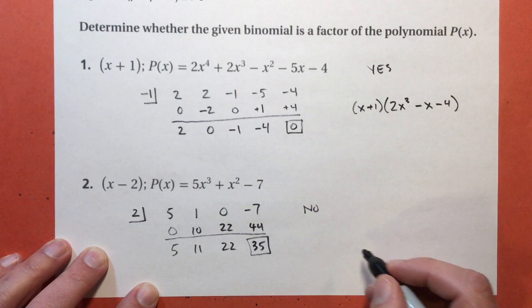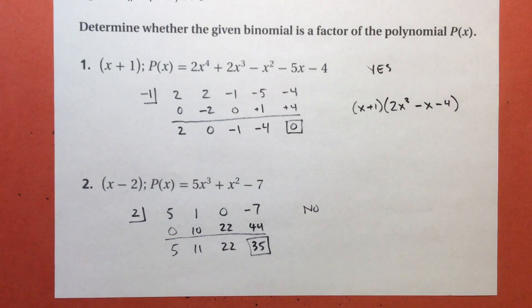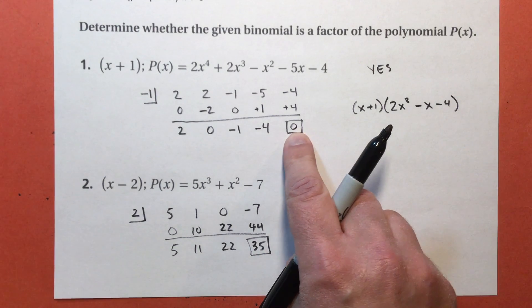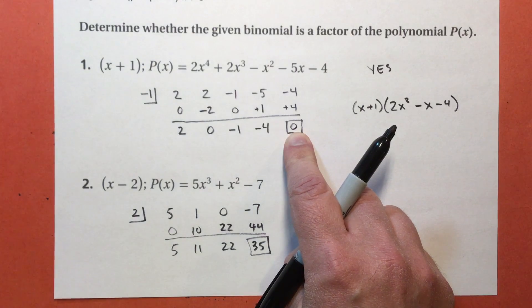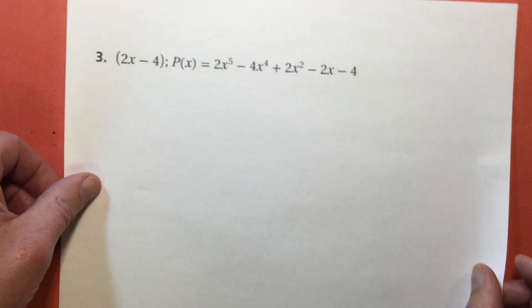So no, x minus 2 is not a factor of that polynomial. So again, if I get a remainder that's not 0, it's not a factor. If my remainder is 0, which means no remainder, then it is a factor. Let's do one more.